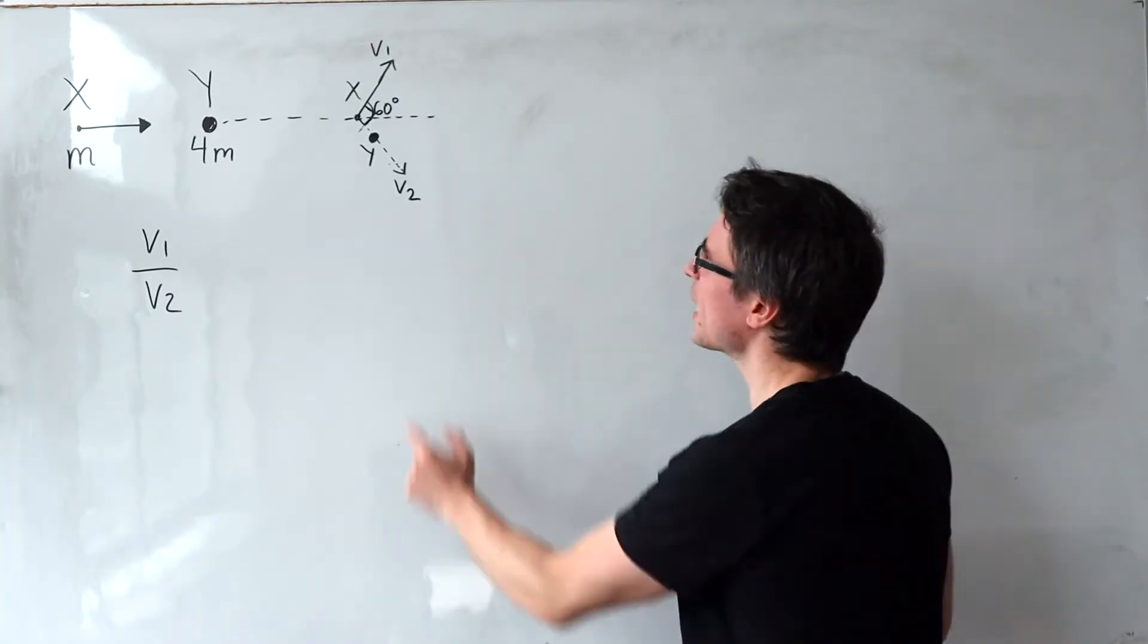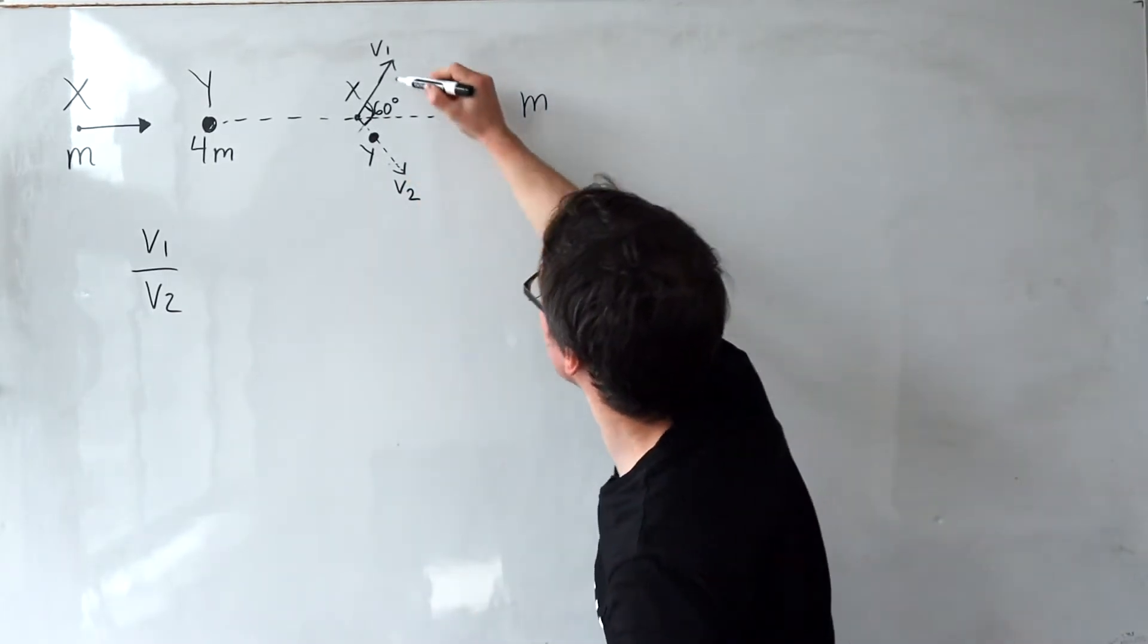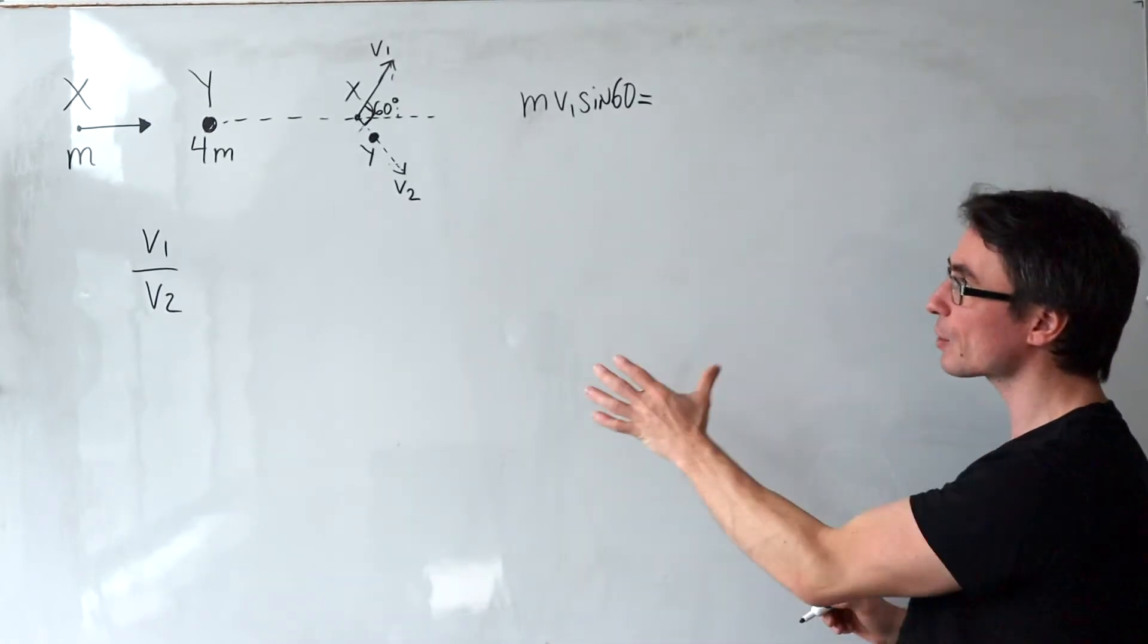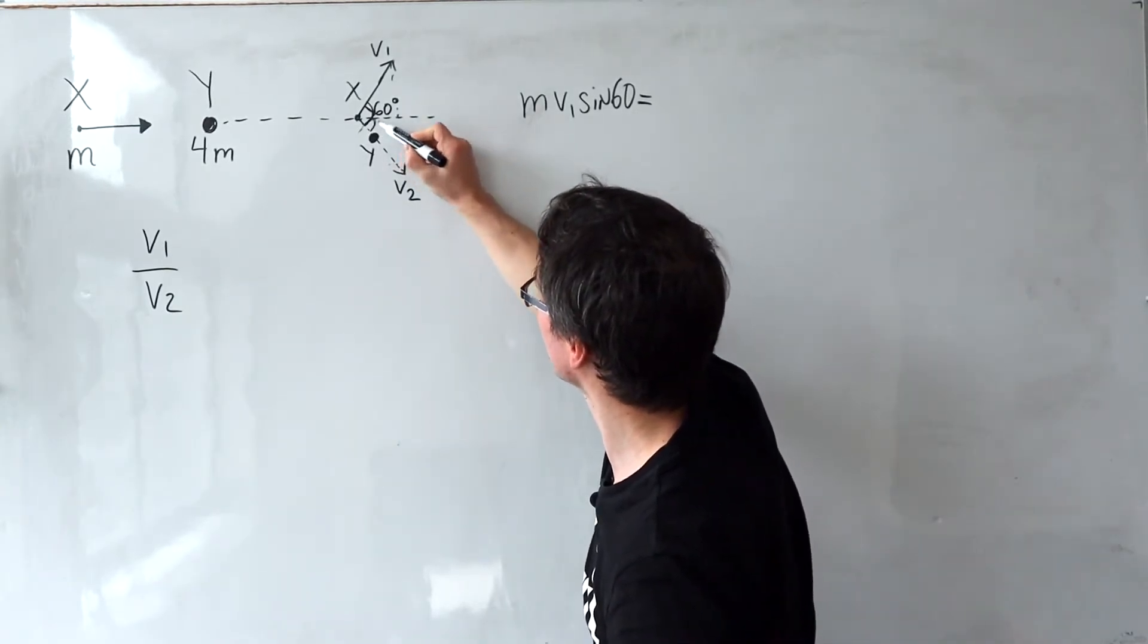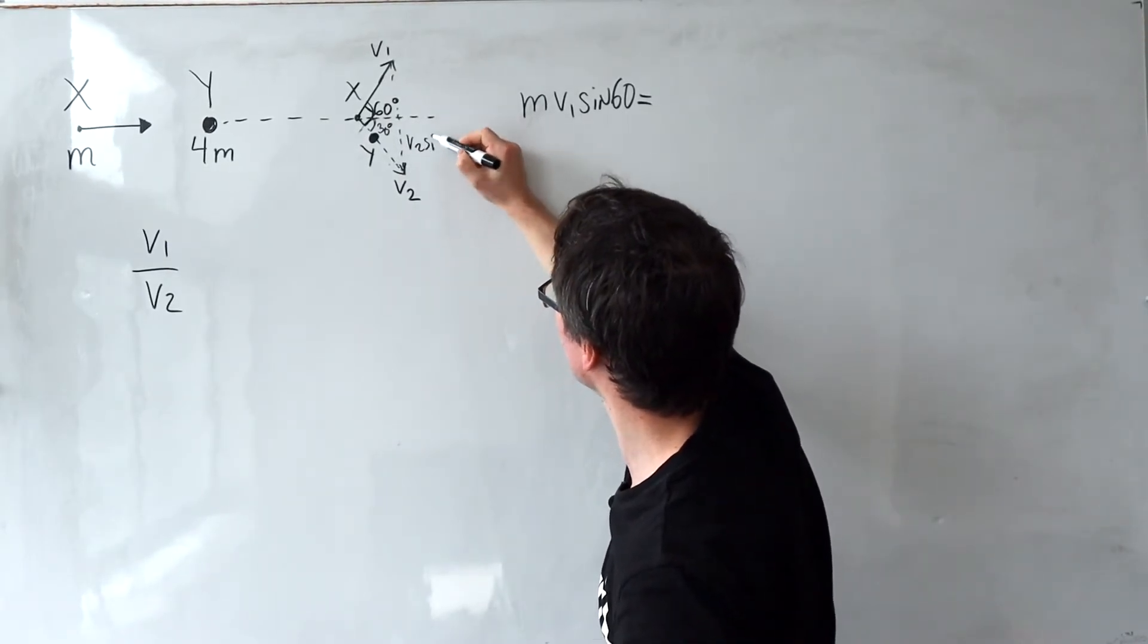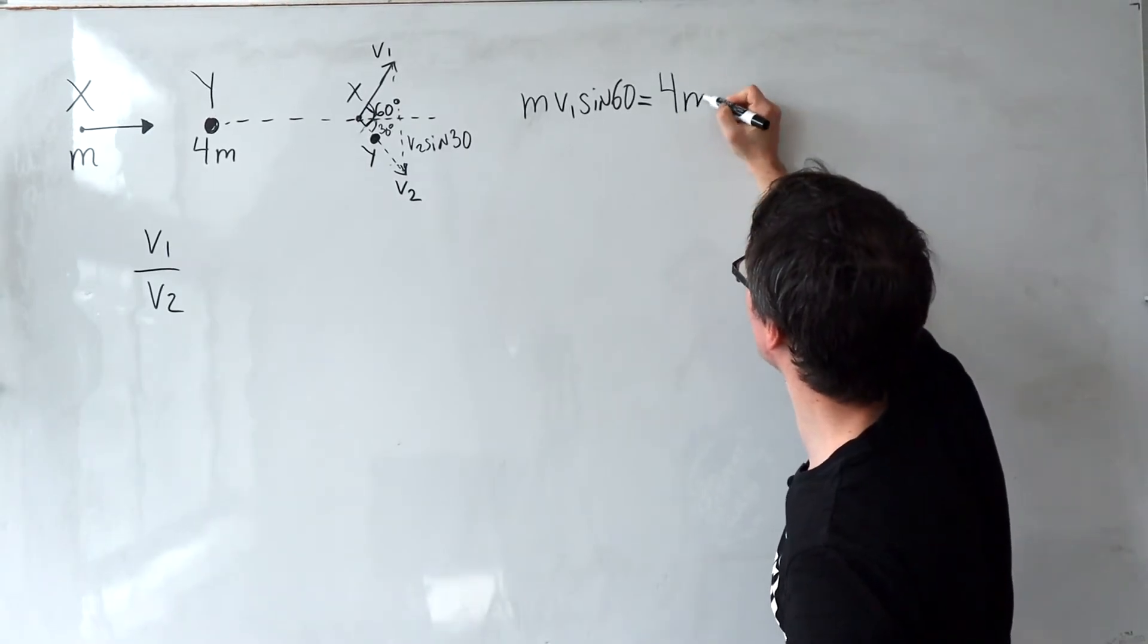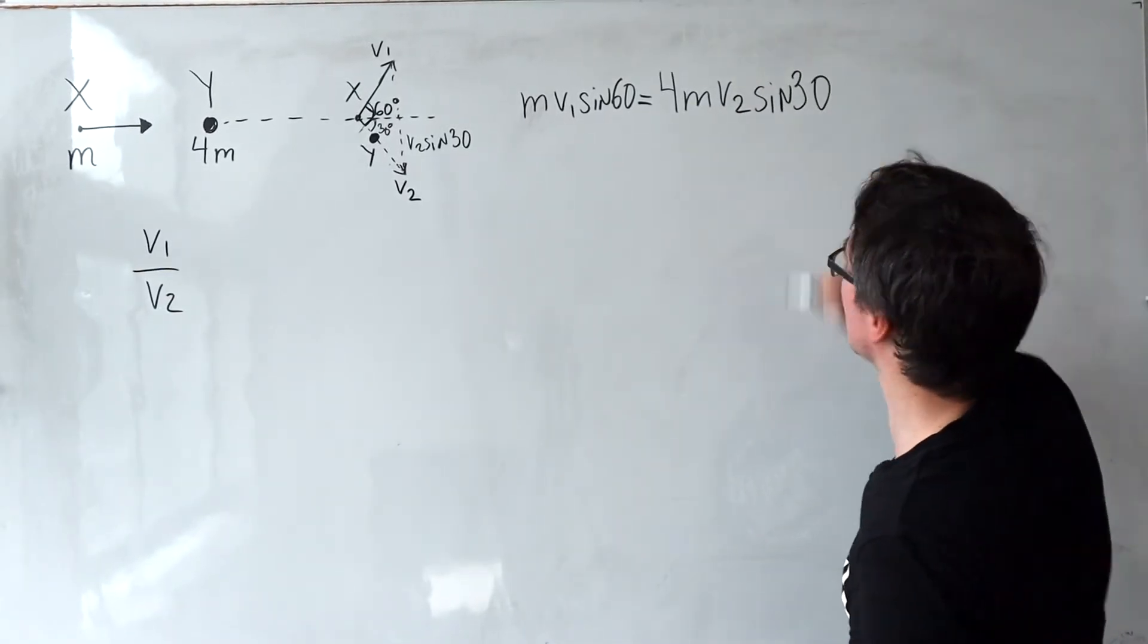Momentum is mass times velocity, so the mass of X was just M, multiplied by the vertical component, which is just going to be this one of the velocity, which will be V1 sine of 60. The magnitude of this has to be equal to the momentum of Y. So if this here is a right angle, this means that the angle to the horizontal here will be 30 degrees. We're just going to make this component V2 sine of 30, giving us a vertical momentum for particle Y to be its mass, which is 4M, times the vertical speed, which will be V2 sine of 30 degrees.